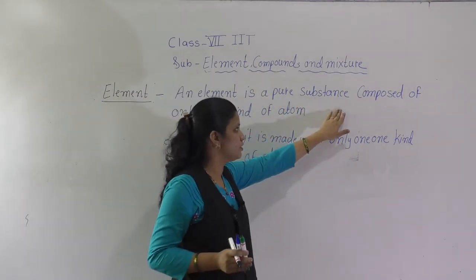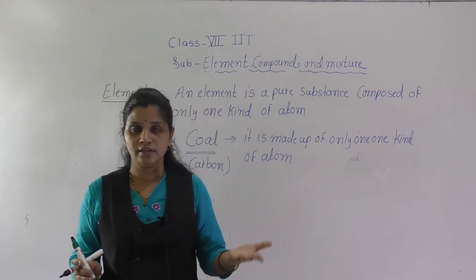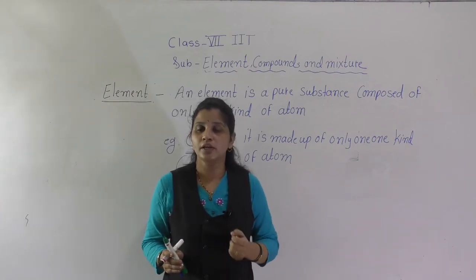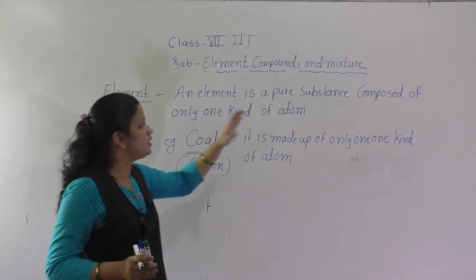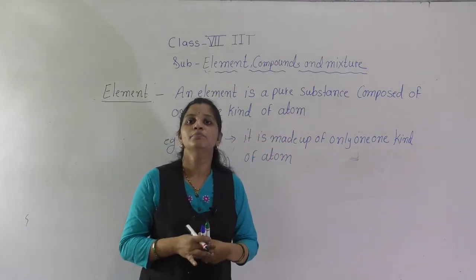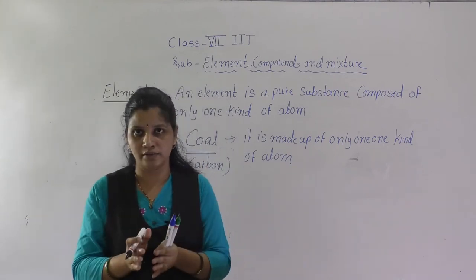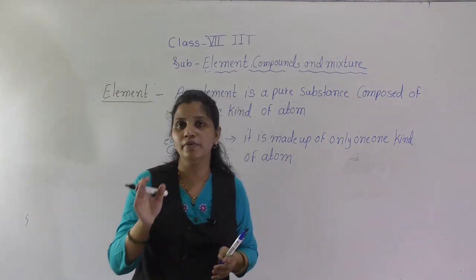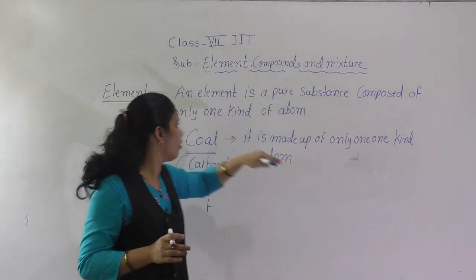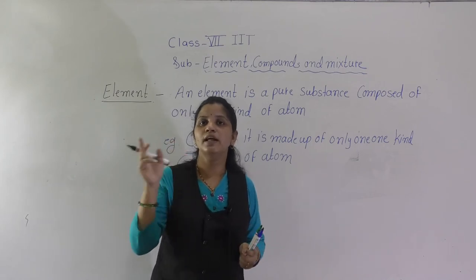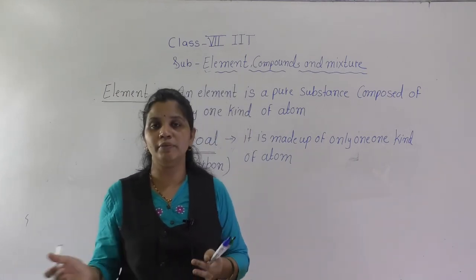An element is a pure substance composed of only one kind of atom. Pure substance classifies into elements and compounds. Pure substance means it contains only one kind of atom — for example, hydrogen contains only hydrogen atoms, not atoms of any other element. An element contains more than one atom, but they are all the same element. For example, hydrogen written as H2 contains two hydrogen atoms but only hydrogen atoms — no carbon or oxygen atoms.